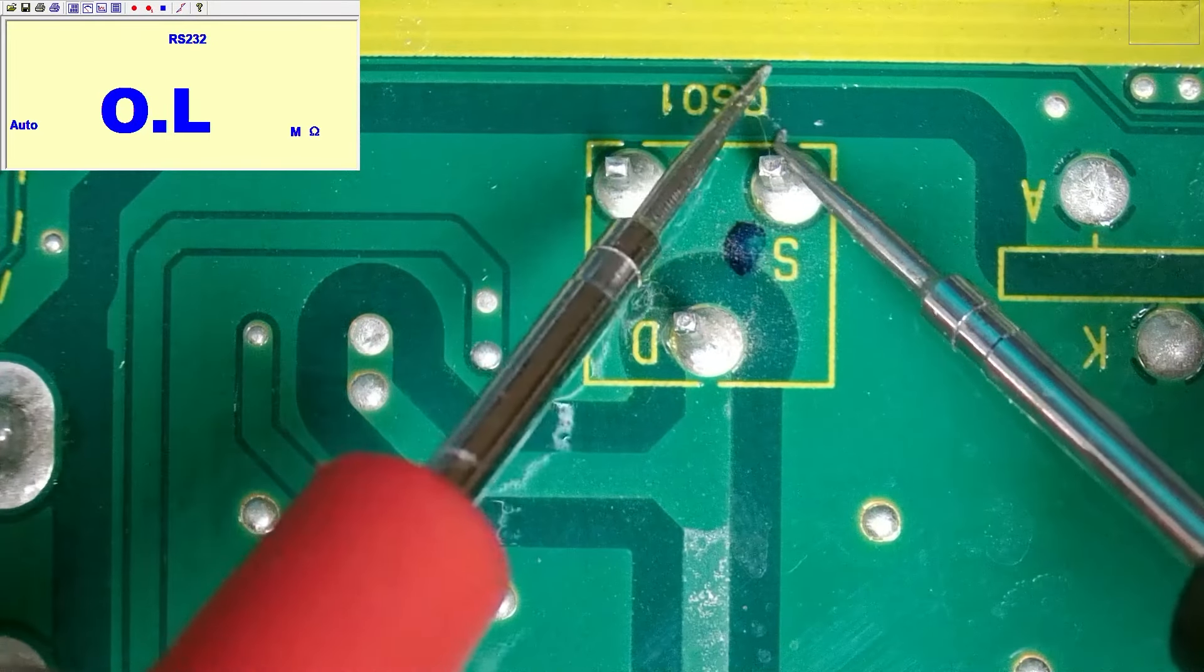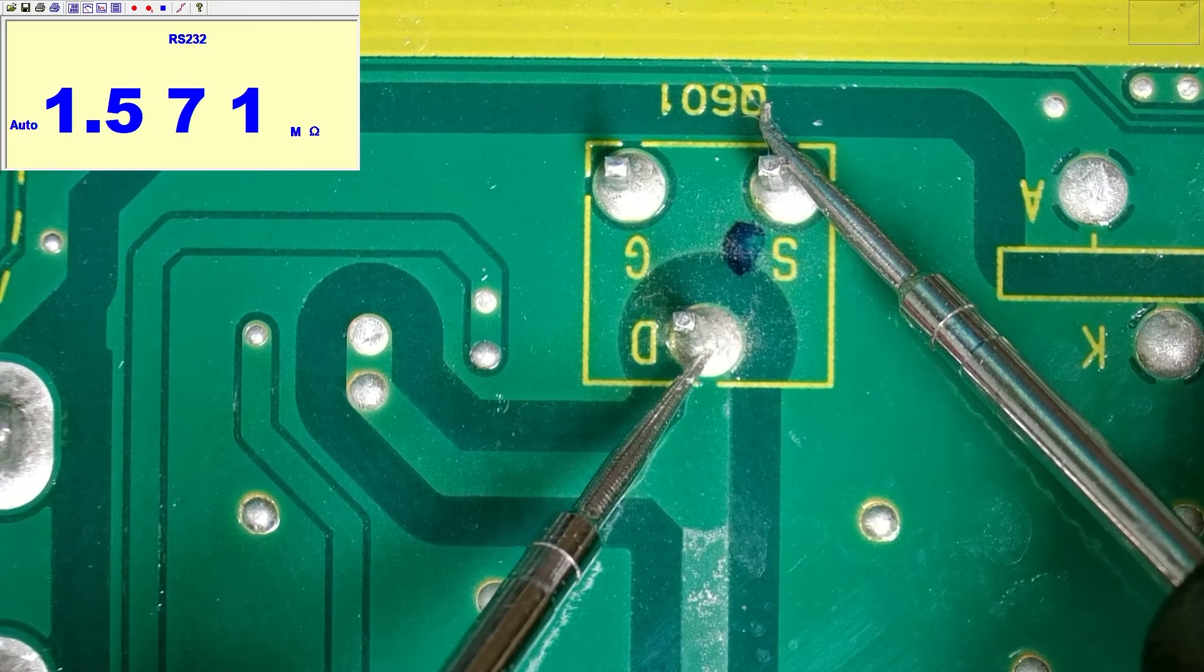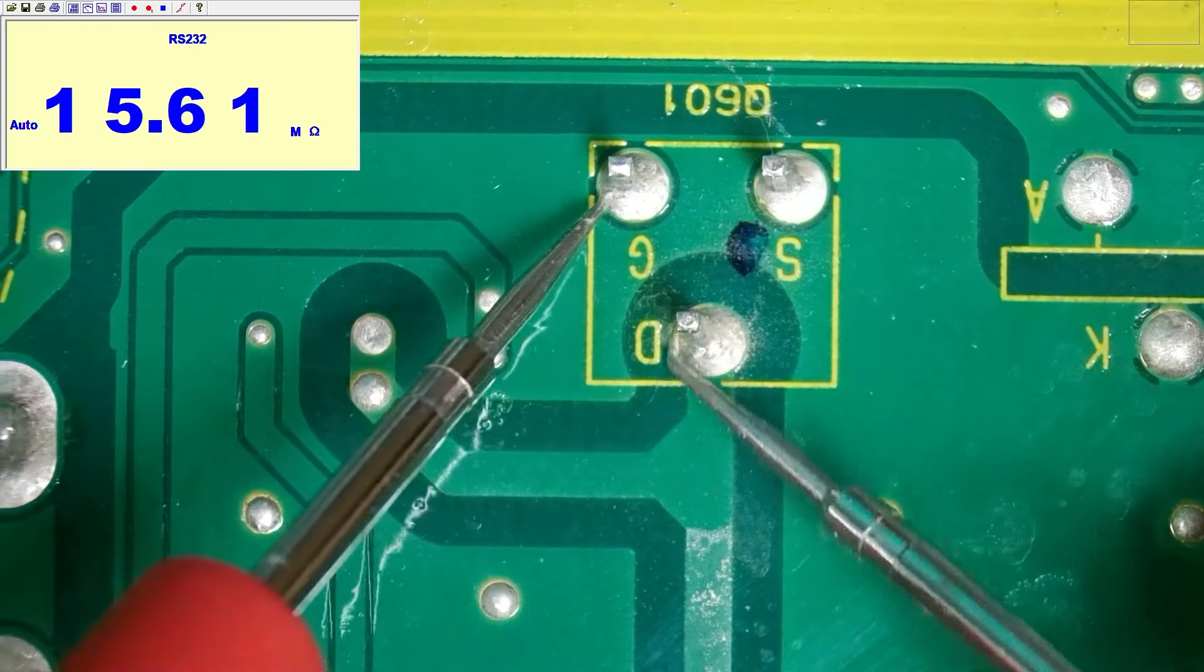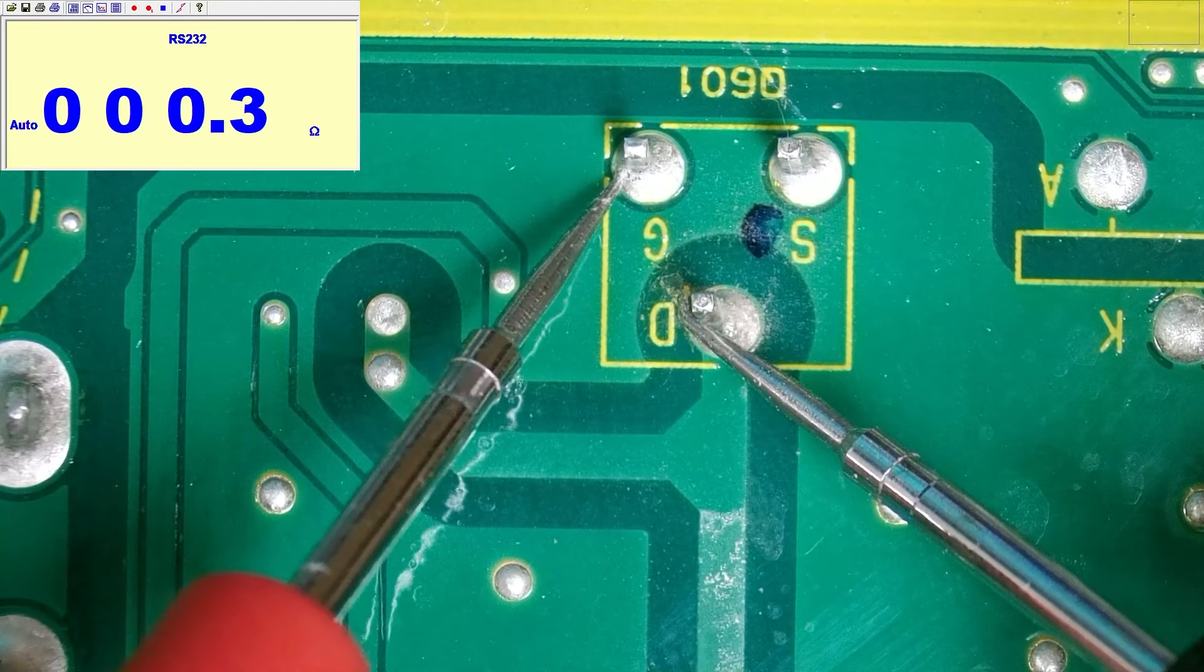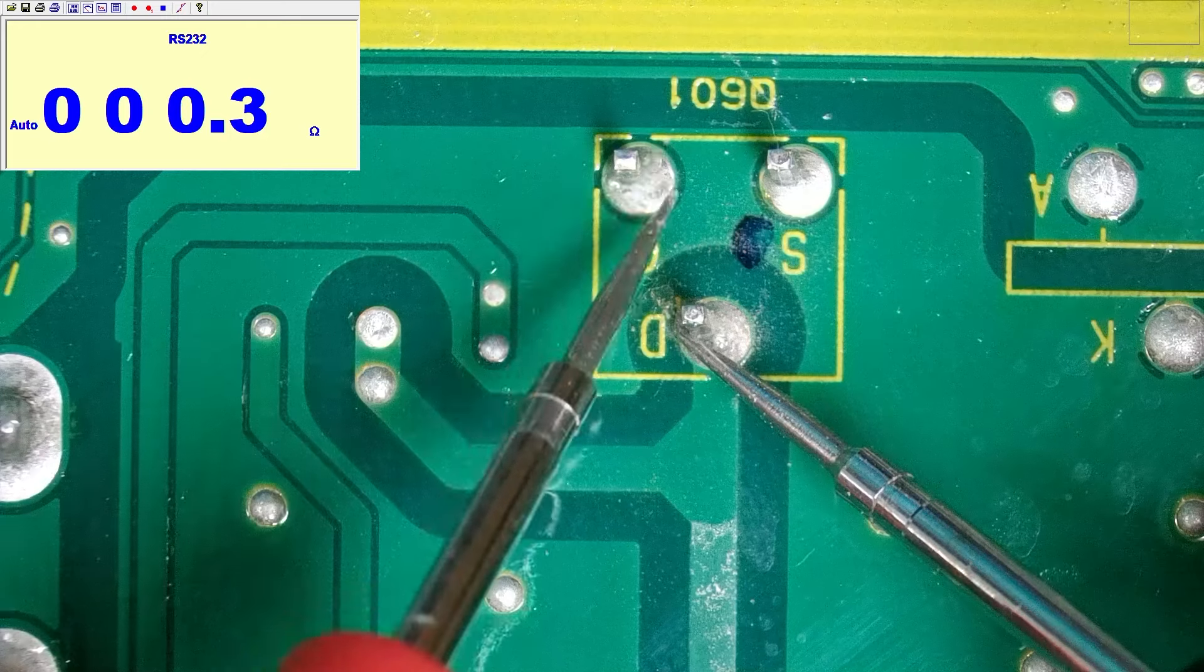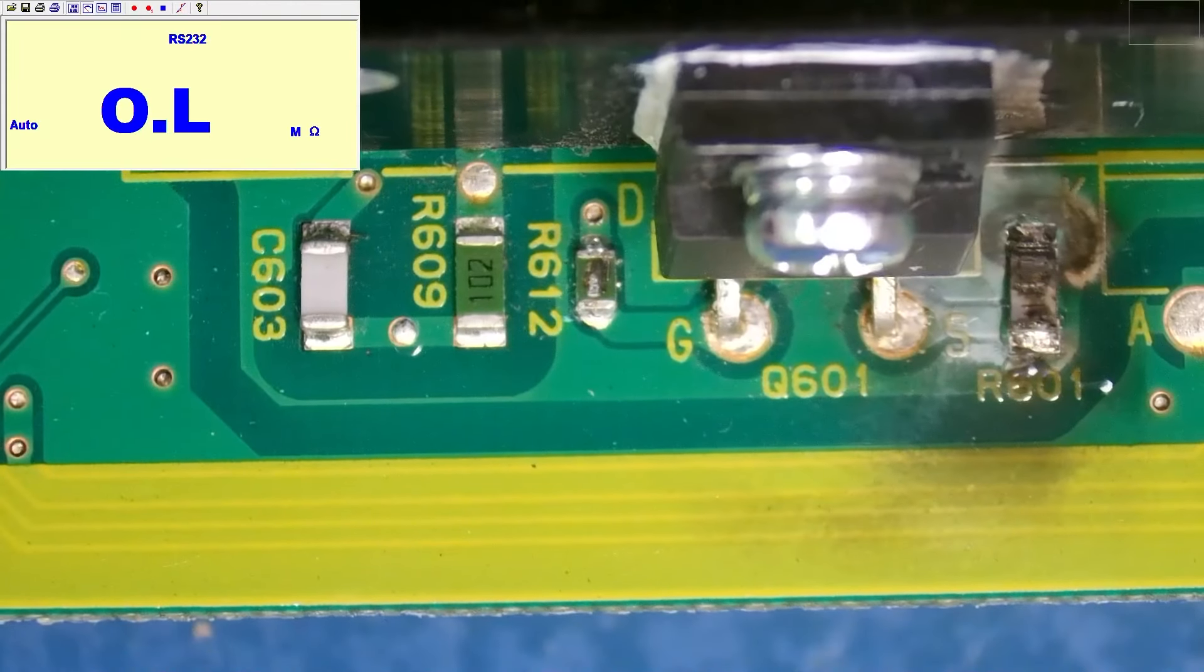But this one over here, Q601, this is the one where the resistors were blown on the front. So 1.57 mega ohms. And we have 0.4 ohms. And this is Q601, which was the one with the resistor on the front that was blown.